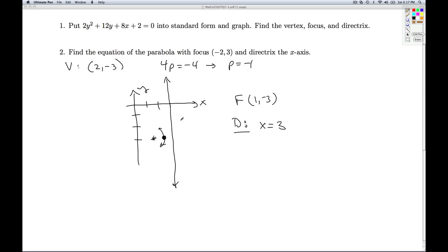The focal diameter is going to have a length, the absolute value of -4, which is 4. So that means here at the focus, the parabola is going to be 4 units wide, so it's going to be 2 units up and 2 units down from the focus. And so I can go ahead and connect those up in a parabolic fashion. And there's a pretty decent sketch of that parabola. So that'll do it for number 1.